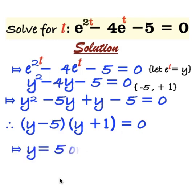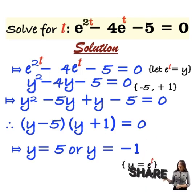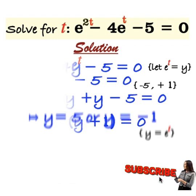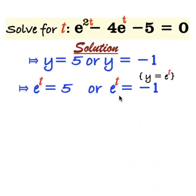Then, y is equal to 5 or y is equal to minus 1. But recall that y is equal to Euler's constant raised to the power t. Therefore, Euler's constant raised to the power t is equal to 5, or Euler's constant raised to the power t is equal to minus 1.